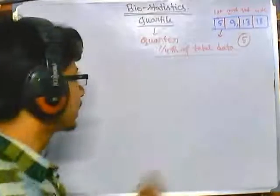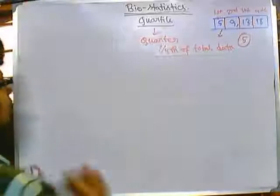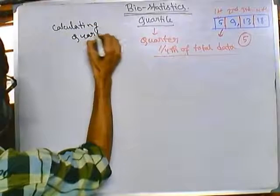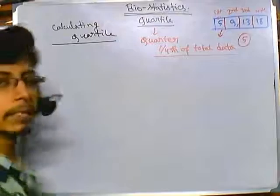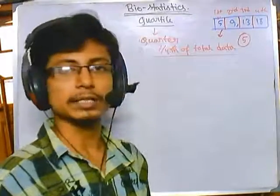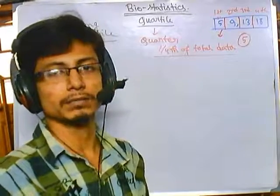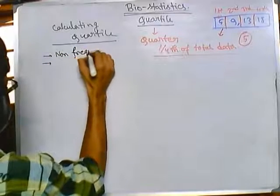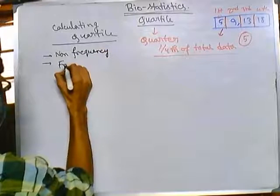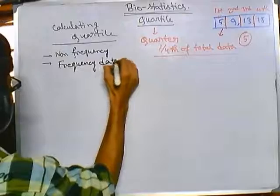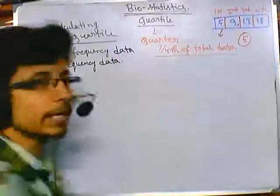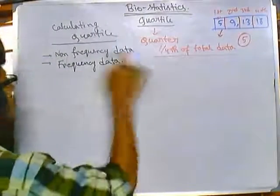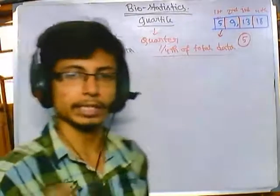The second important thing is how to calculate the quartile. We can calculate quartiles using mathematical formulas and also using simple derivations. We can calculate quartiles for two different types: one is for non-frequency data and another is for frequency data, and these have different formulas.